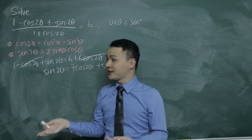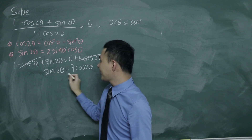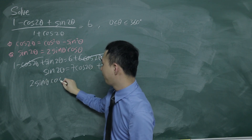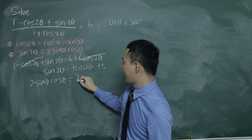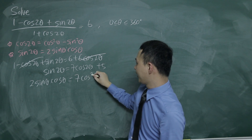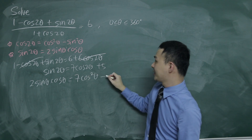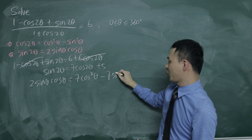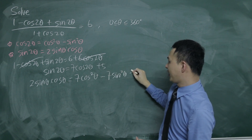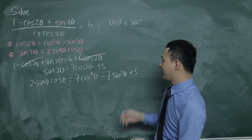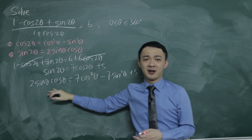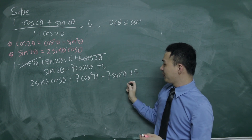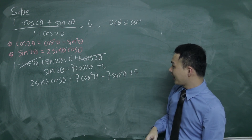Now it's time to apply the formulas. Sin 2θ becomes 2 sin θ cos θ, and this equals 7 times (cos²θ minus sin²θ) — because I multiplied 7 for both — so it's minus 7 sin²θ, plus 5. A lot of students will start here because you have sine and cosine, and maybe you can try to factorize it.